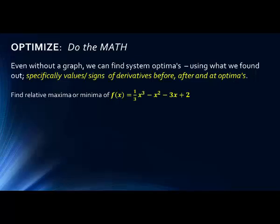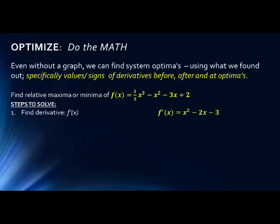Even if we don't have a graph, because of what we've learned about derivatives, we can find optimum values using derivatives — finding the values and signs of derivatives before, after, and at the optima. We find those by finding critical values, or values where, when we plug in x, the slope goes to zero.